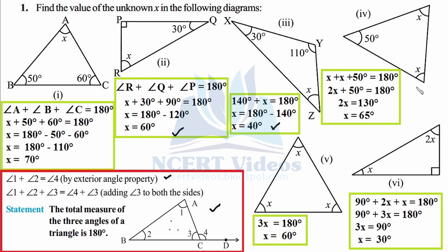In the fourth part: 50 plus x plus x. The two angles are equal, so they are represented with the same variable x. This tells us the triangle is isosceles with two equal base angles. So x plus x plus 50 equals 180 degrees — that is 2x plus 50 equals 180. Transposing: 180 minus 50 is 130, and dividing by 2 gives x equals 65 degrees.